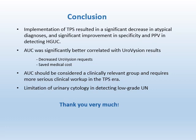In conclusion, implementation of TPS resulted in a significant decrease in atypical diagnosis and a significant improvement in specificity and PPV in detecting high-grade UC. AUC was significantly better correlated with UroVysion FISH results, which decreased FISH test requests and saved medical costs. AUC should be considered a clinically relevant group requiring more serious clinical workup in the TPS era. Lastly, urine cytology has low sensitivity in detecting low-grade UC, and the sensitivity may be even lower under TPS. It is very important for urologists to understand the limitations of urinary cytology and the implications of changes introduced by TPS to best manage and care for their patients. Thank you very much.